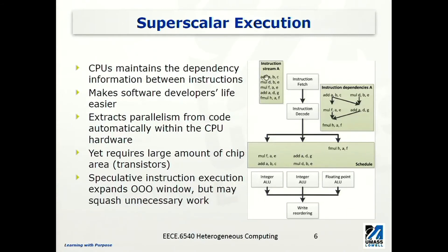In this example there are no branch instructions, so all instructions will be executed regardless. But if there is a branch instruction, some instructions may not be executed. Branch instructions are typically resolved at a later stage based on conditions, so there's a chance you'll execute some instructions early but eventually find out they should not have been executed. We call this speculative execution. It expands the out-of-order window by looking further beyond a basic block and beyond a branch instruction. It tries to be aggressive, but when the branch is resolved and instructions should not have executed, it has to void those instructions.